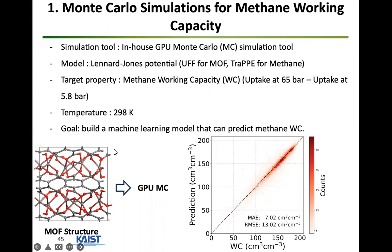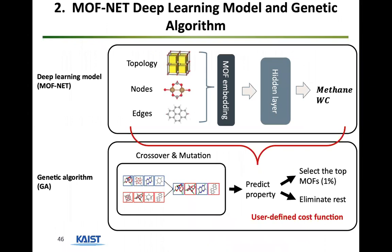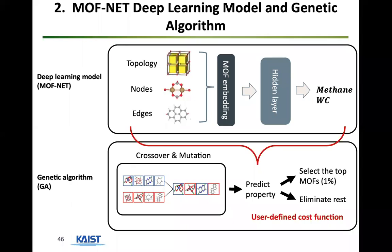With this tool we can output what the methane working capacity would be for an input MOF. The MOF embeddings represent topologies, nodes, and edges as integer types — node type 1, 2, 3, 4; edge type 1, 2, 3, 4 — and the network predicts working capacity. Combined with the genetic algorithm, it swaps nodes and edges to find new MOFs, uses the machine learning model to predict properties, selects the top performers that go on to the next generation, and continues this process to judiciously explore the 200-trillion-MOF search space.